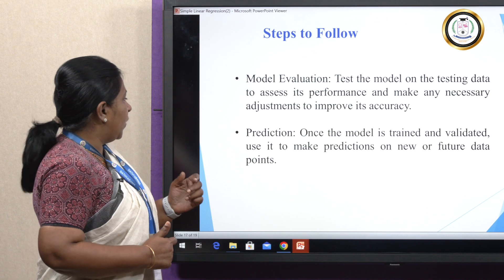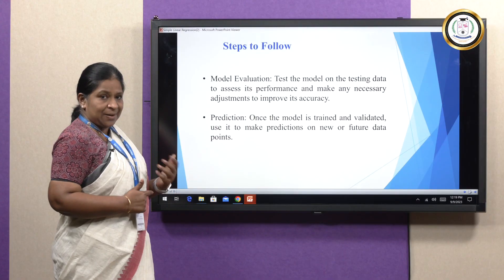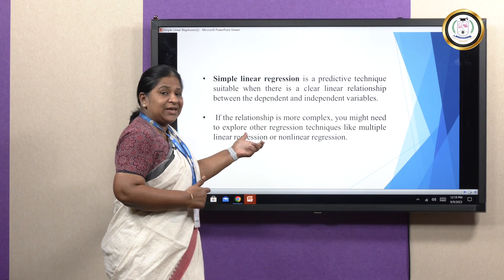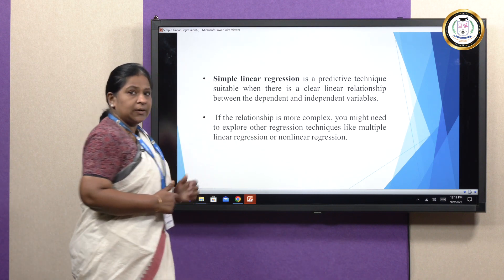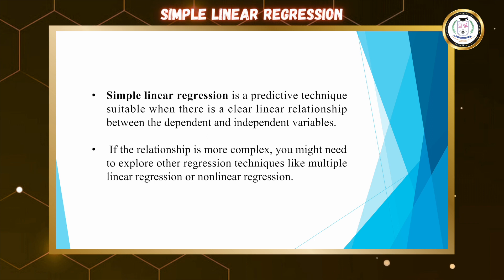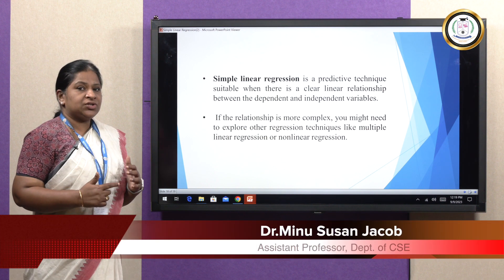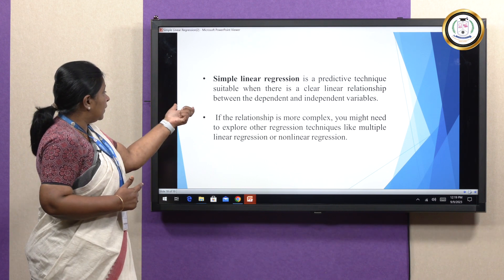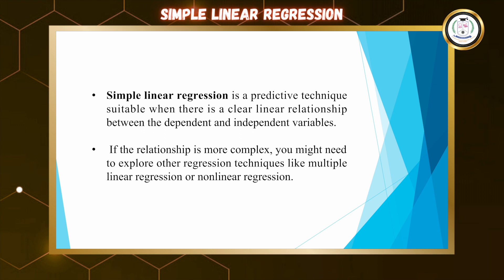The last stage is prediction, where once the model is ready and tested, we use it for making future predictions in any new scenario or situation. In short, simple linear regression is a predictive technique suitable when there is a clear linear relationship between the dependent and independent variable. If the dataset is complex and the relationship involves more than a single independent variable, we go for other methodologies like multiple linear regression or other available algorithms. Thank you.